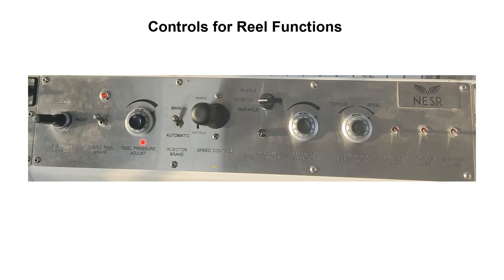Then we have a fourth control for the reel forward movement and backward movement. In this particular unit, that knob is installed outside the control cabin. And then here we have the tubing loop button — if we want to perform the lubrication of the CT pipe, we can use this knob or button.